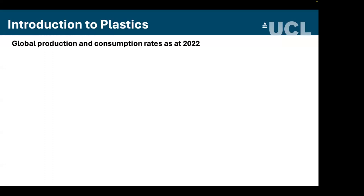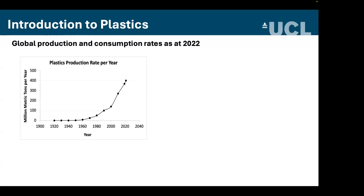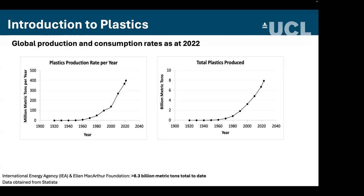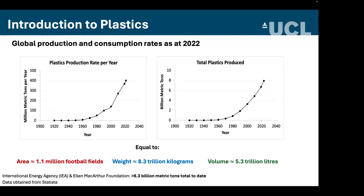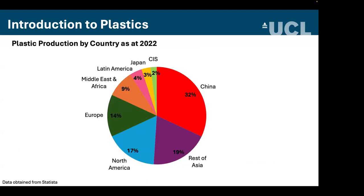Looking at the scale of our relationship with plastics: the latest trends in production and consumption have reached 400 million metric tons per year, and the cumulative total of plastic produced to date is over 8.3 billion metric tons. To help comprehend that: it's equivalent to 1.1 million football fields, 8.3 trillion kilograms, and around 5.3 trillion litres. Most plastic is produced in Asia, followed by North America and Europe.